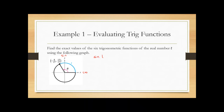Sine is always Y, cosine is always X — write those on your graph to remember. So sine of T is just the Y value from that ordered pair, which is 15/17. Since we're doing all six trig functions, the reciprocal of sine is cosecant, so cosecant of T is 17/15. Next, cosine of T is the X value, which is -8/17. The reciprocal of cosine is secant, so secant of T is -17/8.